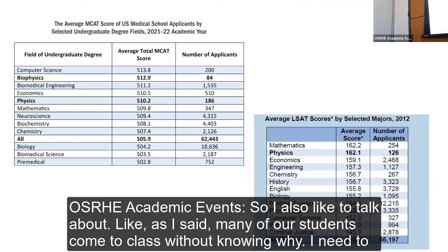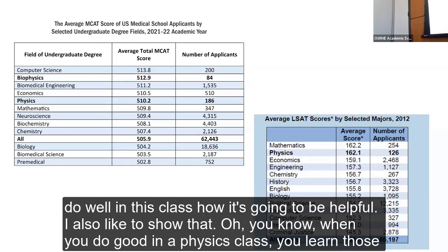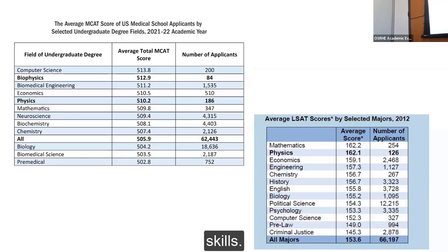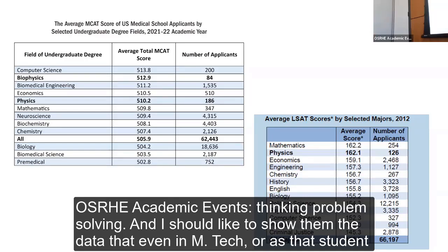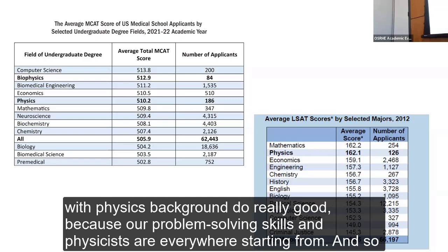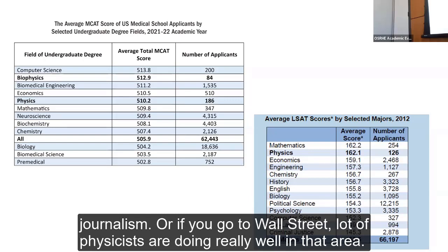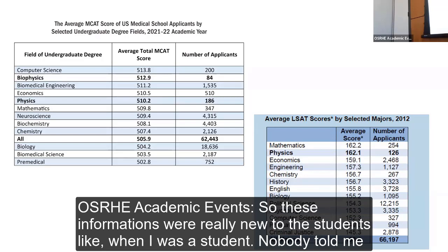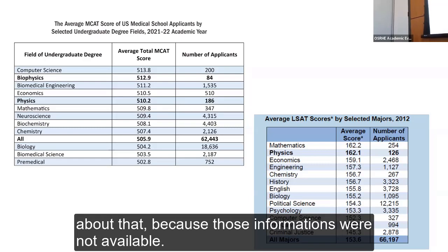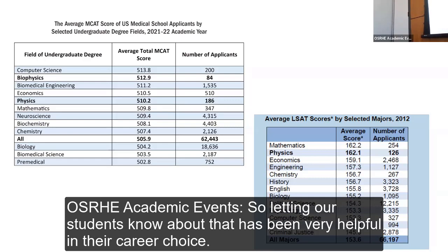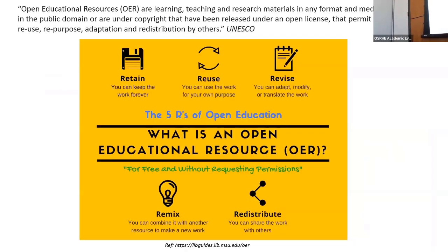Many of our students come to class not knowing why they need to do well or how it will help them. I like to show them that doing well in physics builds critical thinking and problem solving skills. I show them data that students with a physics background do really well on the MCAT, and that physicists are everywhere — from journalism to Wall Street. This information is new to students and has been very helpful in their career choices.